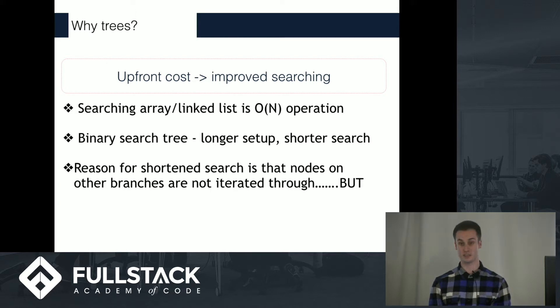It's important to understand the reason that this search is shorter, which is that all of the nodes that are in the branch that isn't gone through are ruled out, and we don't have to iterate through that entire branch, so we're trying to get O(log N) search time.